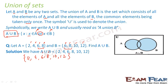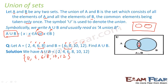Since there are common elements, we create an intersecting Venn diagram. We first write the common elements 6 and 8 in the intersection. Then, A has 2 and 4 remaining, which we write in A's exclusive region. B has 10 and 12 remaining, which we write in B's exclusive region. This completes the Venn diagram representation.